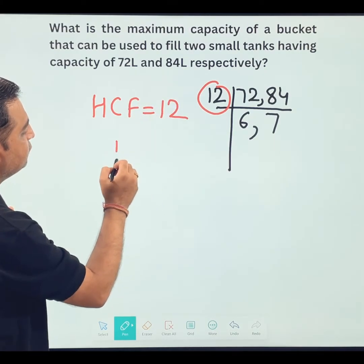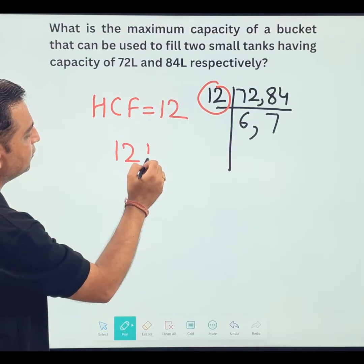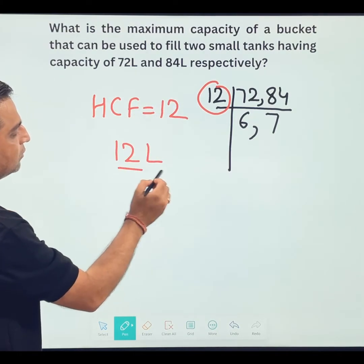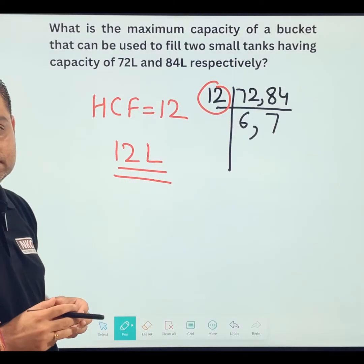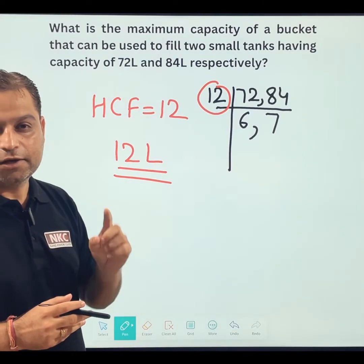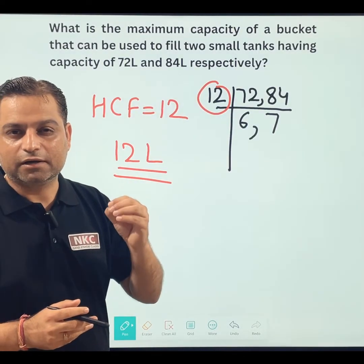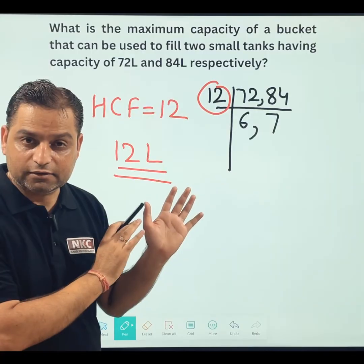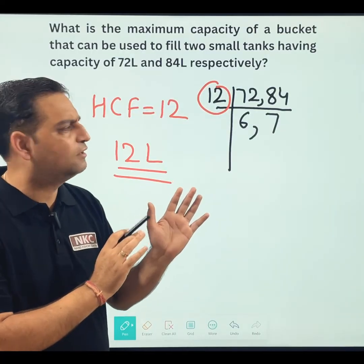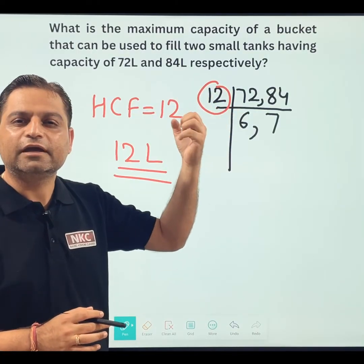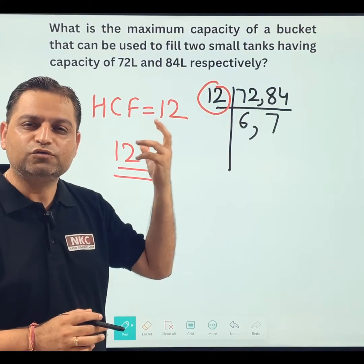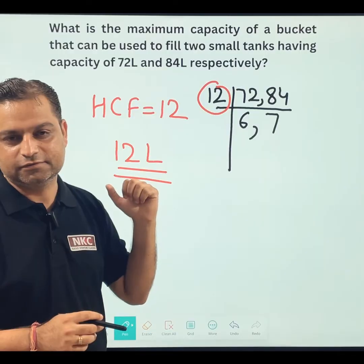The HCF of these two numbers is 12. That means you need a bucket with a capacity of 12 liters. If you have a bucket of maximum capacity 12 liters, then easily both tanks can be filled using the same bucket.